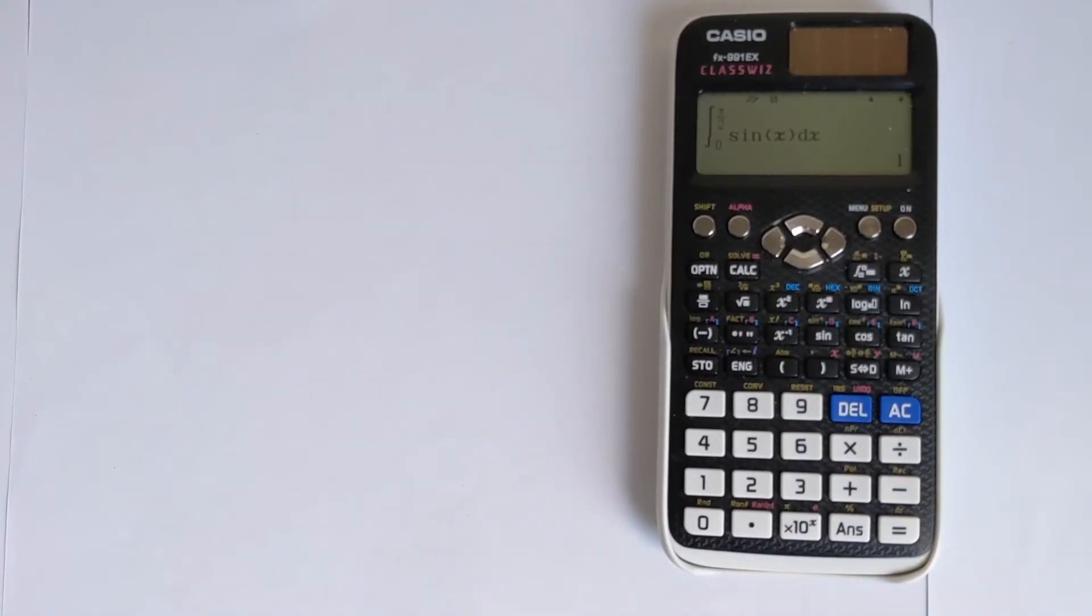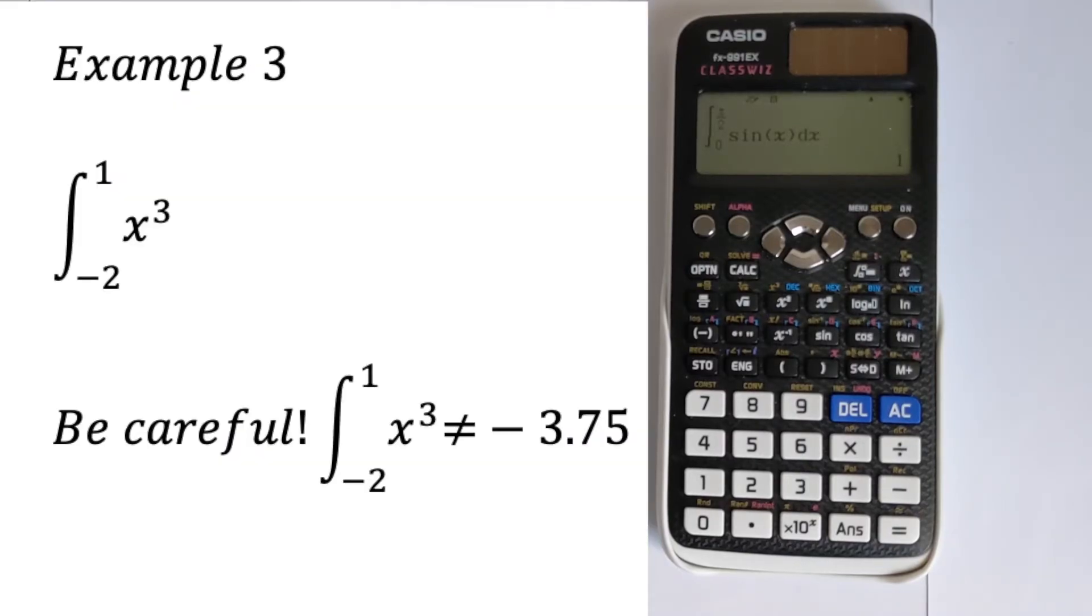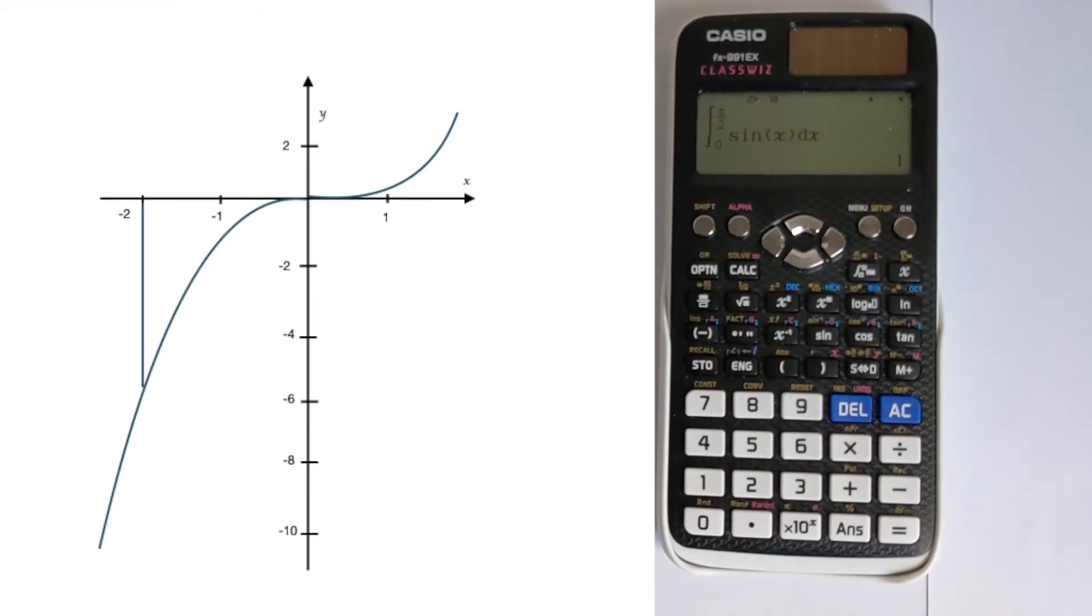For the third example we're going to do something a little bit different. We're going to look at an example where it actually crosses the x axis. So we're doing the integral between minus two and one of x cubed. And you've got to be very careful with this. And you can see that I've plotted it on a graph. That this if you put it into the calculator will immediately give you the wrong answer.